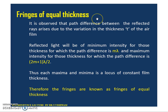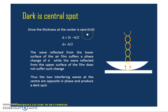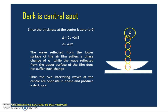These are fringes of equal thickness. In Newton's rings, as in the previous case we discussed, the ring fringes are of equal thickness. One more important point: at the central point, the interference pattern observed is dark. This is because the thickness at that point is zero, so delta = λ/2, which is the condition for destructive interference. Both rays undergo a phase shift and cancel each other, producing a dark spot at the center.